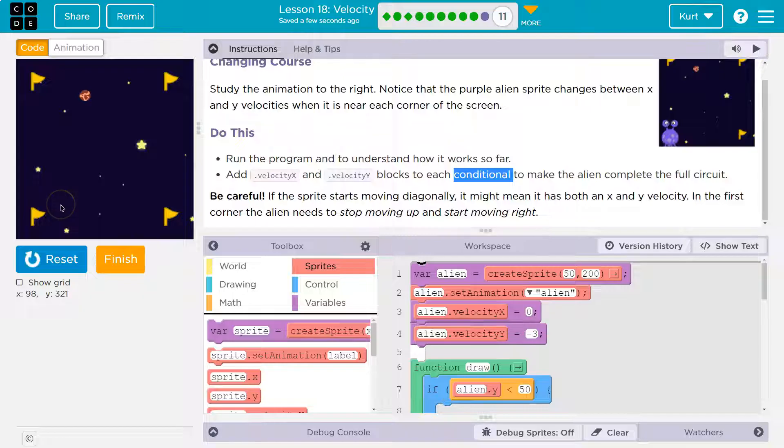Yeah, so if we give something a speed to the right and left at the same time, well what would happen if you try to walk forward and right at the same time, your body is going to be moving diagonally. And so that's what would happen to the sprite.